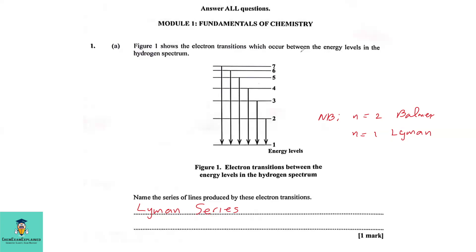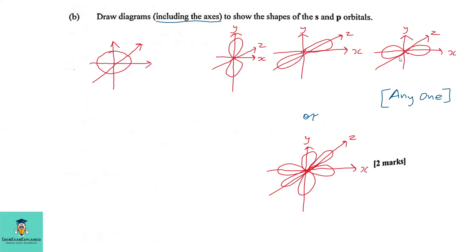Question 1a: Figure 1 shows the electron transitions which occur between the energy levels in the hydrogen spectrum. We're going from the higher levels all the way down to n=1. The question asks us to name the series of lines produced. When electrons transition to n=2 that is the Balmer series in the visible region, but transitions to n=1 is the Lyman series, which is not visible. So the answer is the Lyman series.